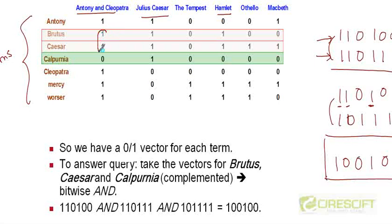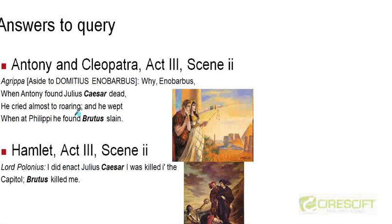And if you look at this play and this play. Both of them contain Brutus and Caesar, but they don't contain the word Calpurnia. And no other play satisfies all the three conditions. So these are the two plays which are the answers to the query.